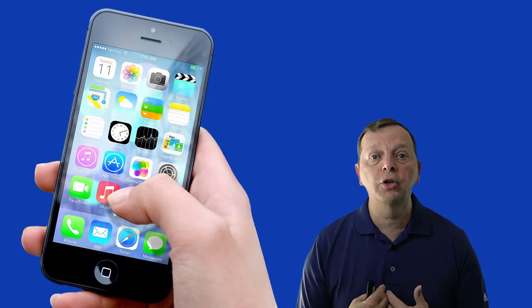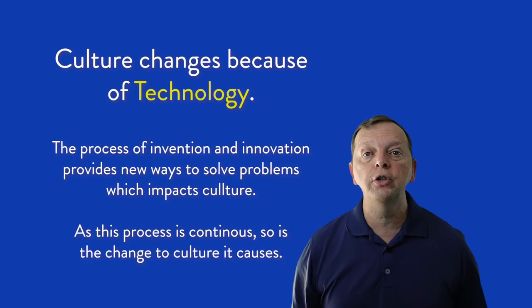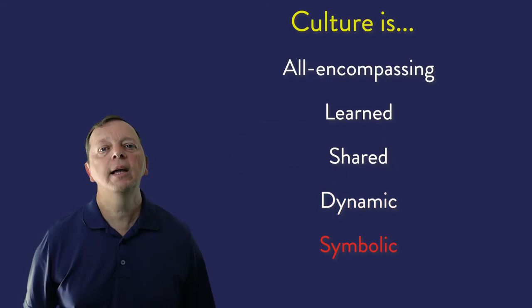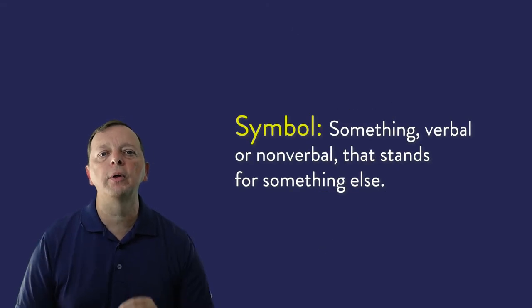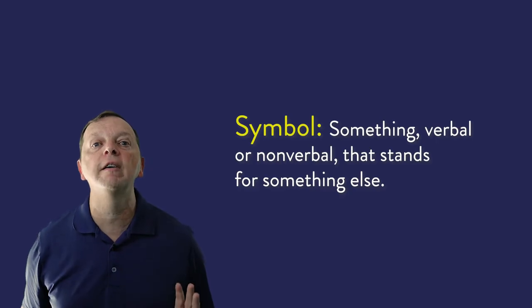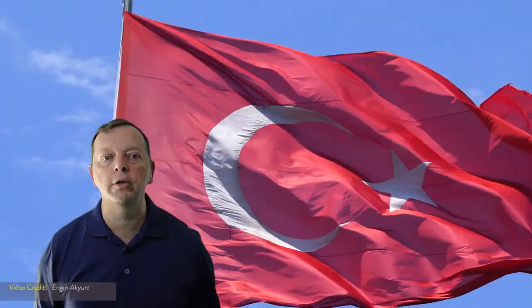A great example of technology changing your culture is your cell phone. When I went to high school, we didn't have cell phones — they didn't exist yet. Yet now, cell phones have changed how we communicate with each other, how we're able to gather information, and even how we are able to take pictures. Technology is always changing, so culture is always changing. We also find that culture is symbolic. A symbol is something verbal or nonverbal that stands for something else. Cultures are based upon a shared set of symbols and meanings.